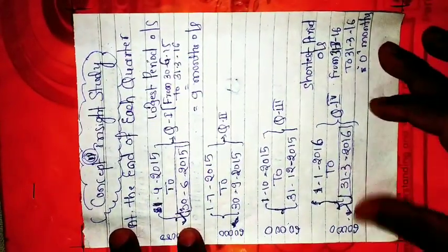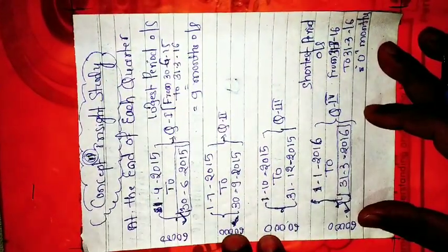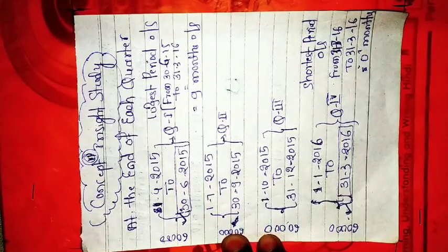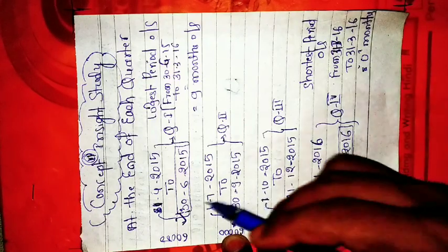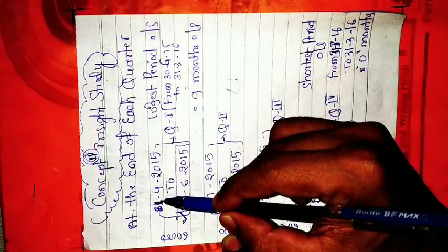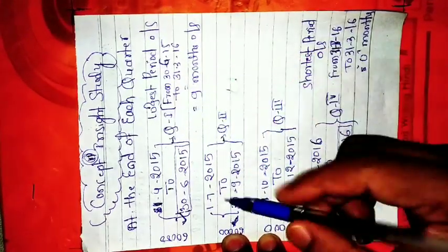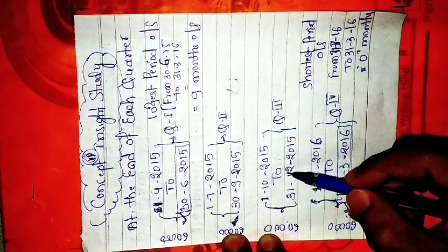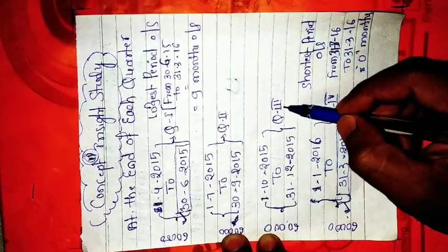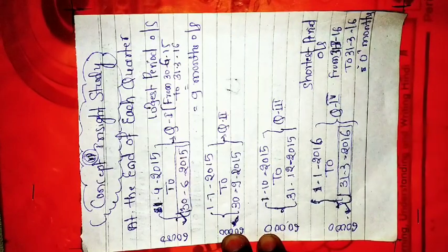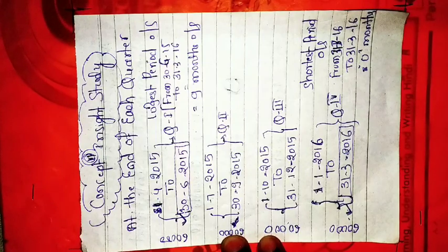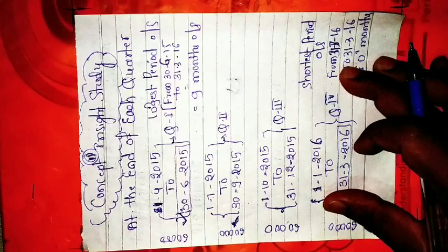In a year there are four quarters. One quarter is equal to three months. April, May, June is the 1st quarter. July, August, September is the 2nd quarter. October, November, December is the 3rd quarter. January, February, March is the 4th quarter. In this case, the amount was withdrawn at the end of each quarter.